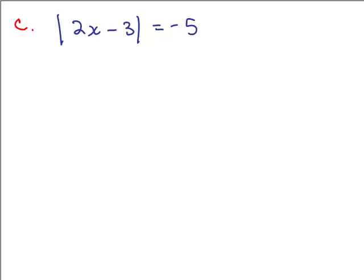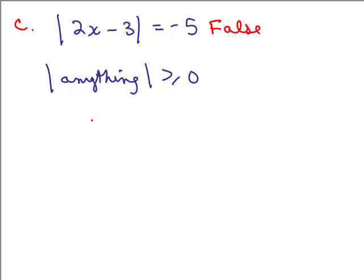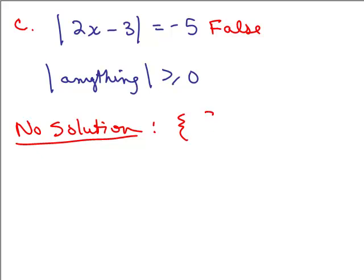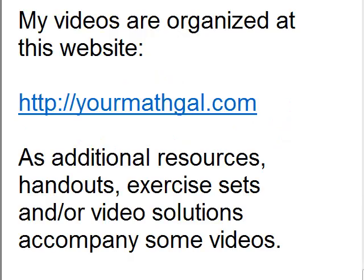Part C: the absolute value of 2x minus 3 equals negative 5. You should stop right here — that's impossible. The absolute value of anything is always greater than or equal to 0, so this is a false statement. That's impossible, so the solution is no solution — the empty set.